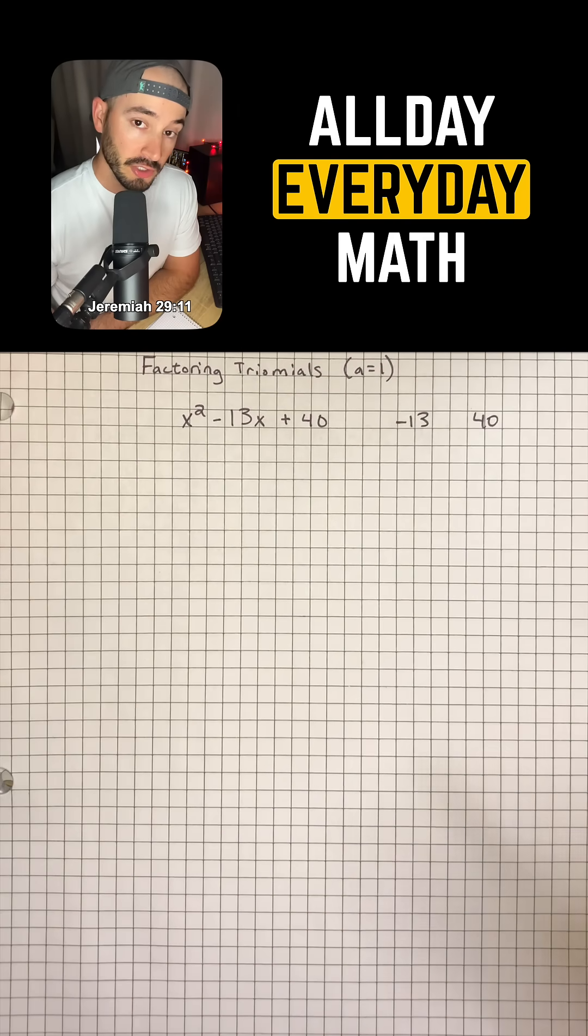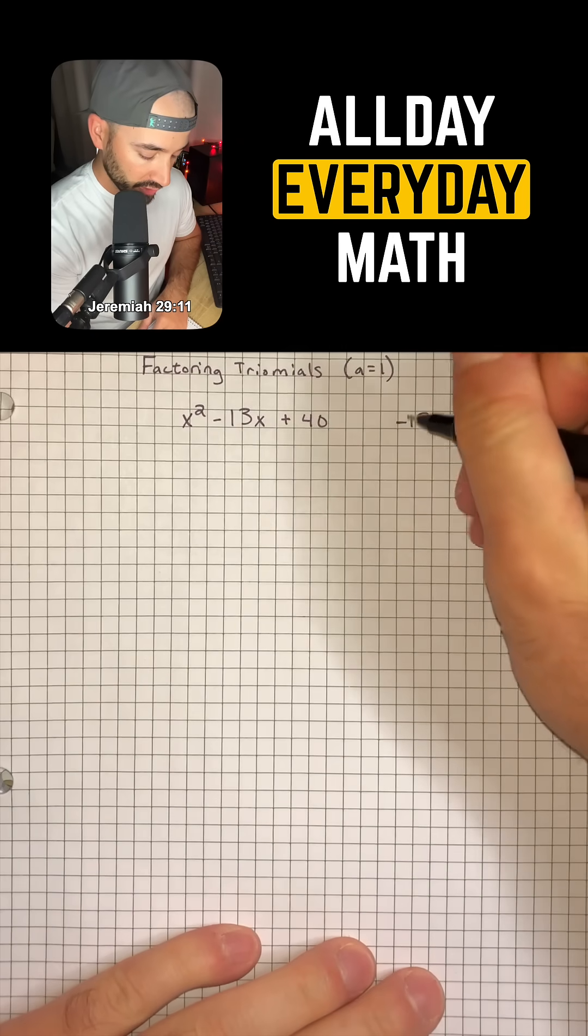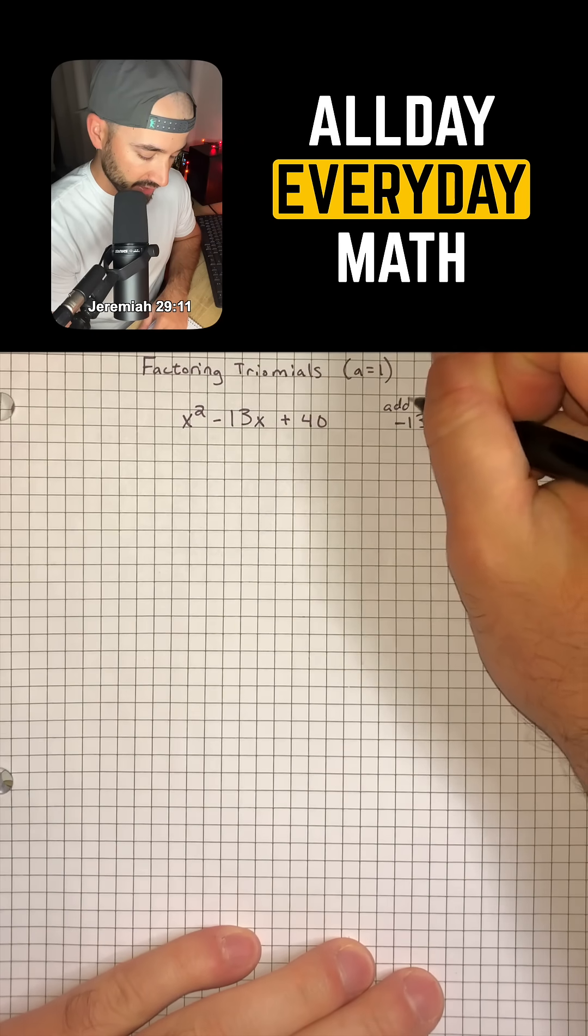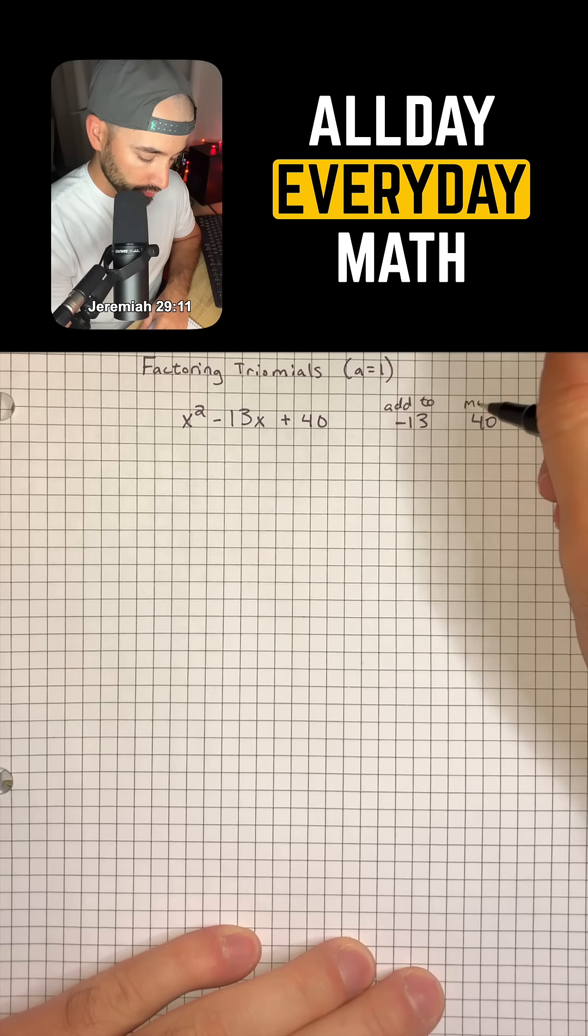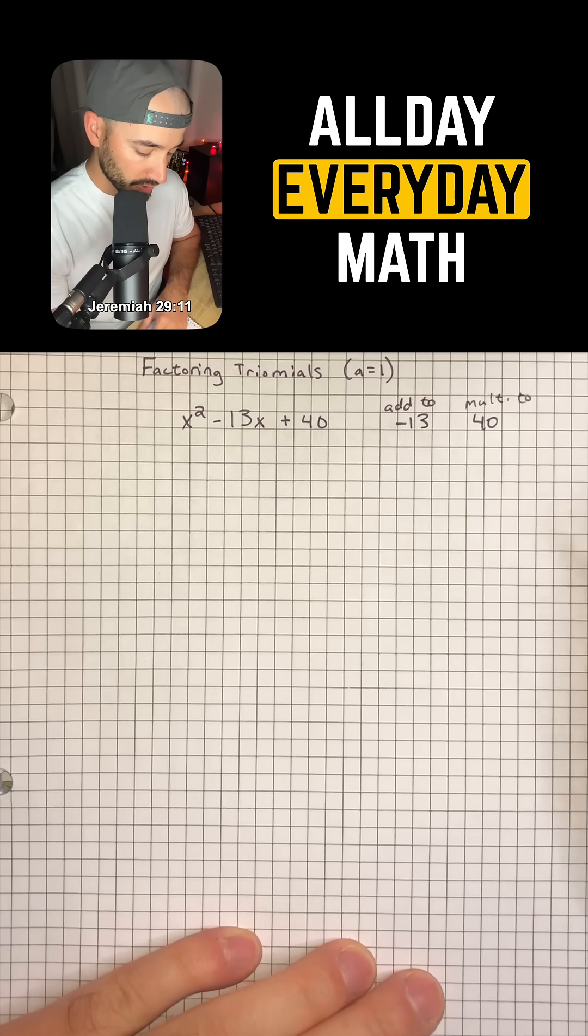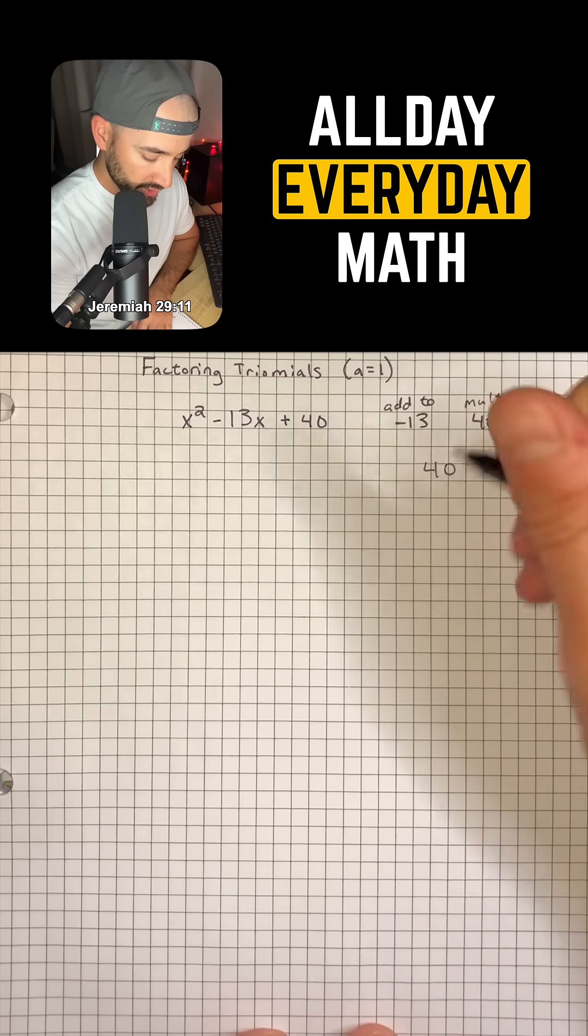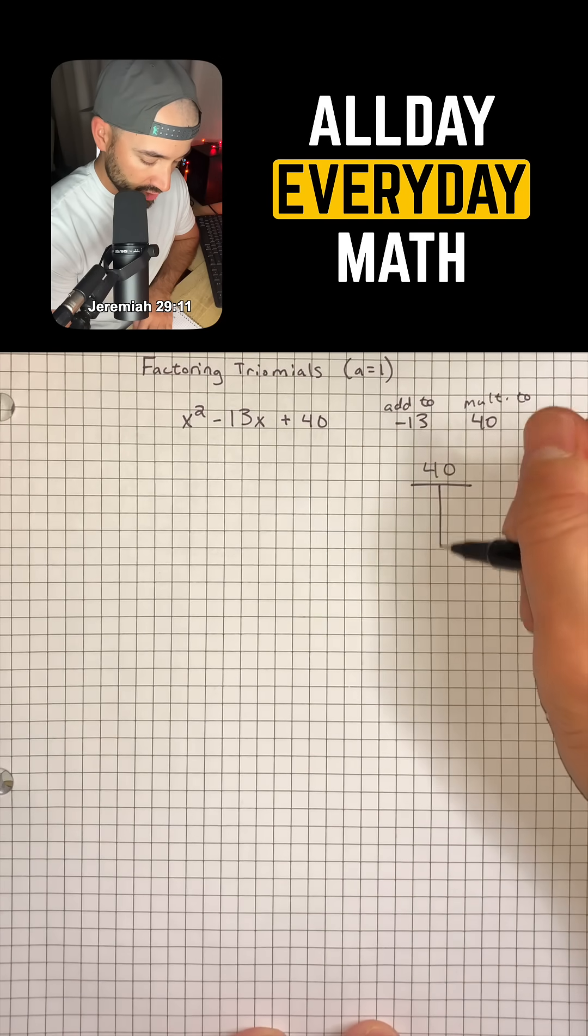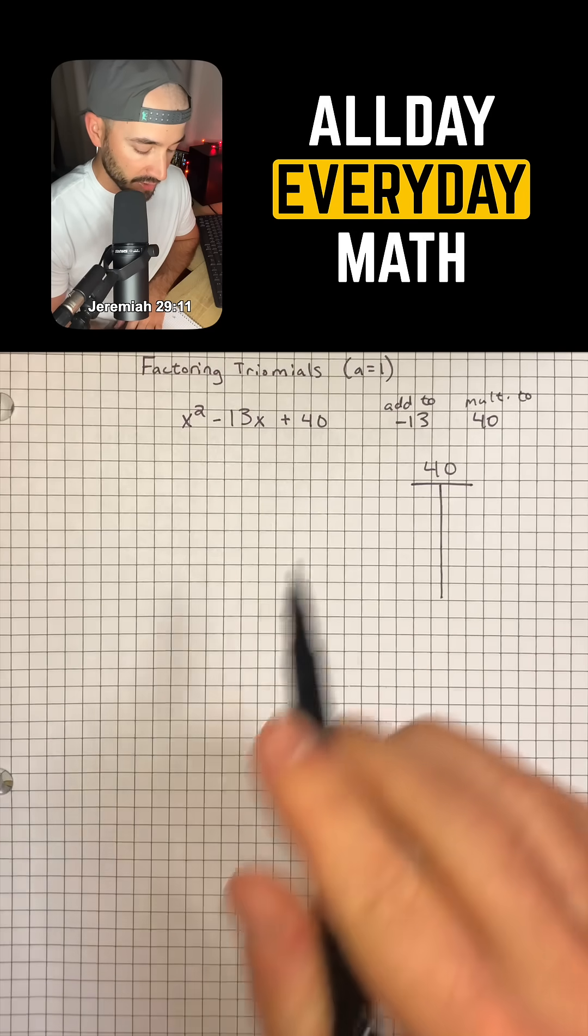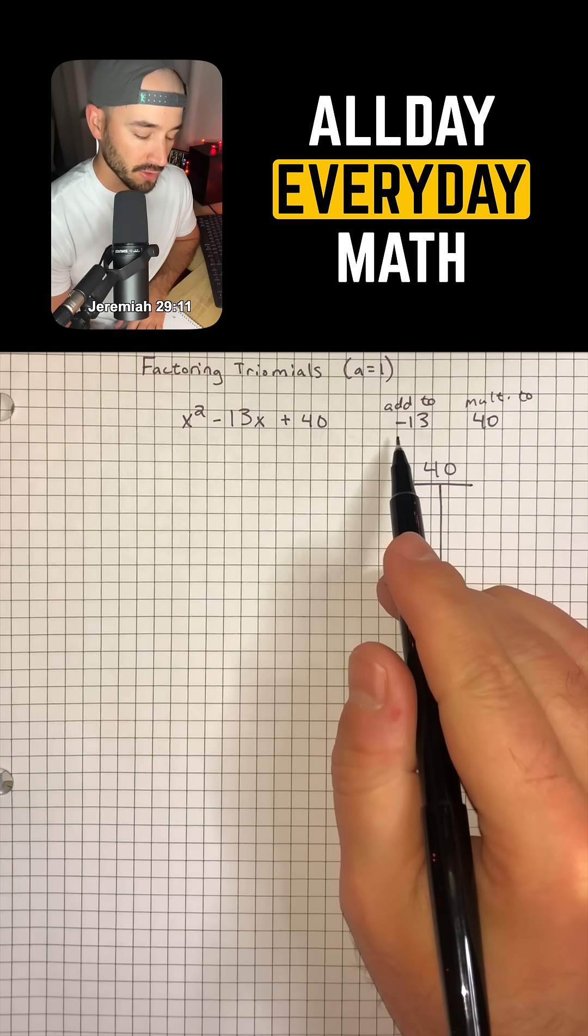And so basically what we're going to do is we're looking for two numbers that add to negative 13 and multiply to positive 40. I'm just going to write out 40 and we're going to make a little chart of the factors of 40. That way we can see what would add up to negative 13.